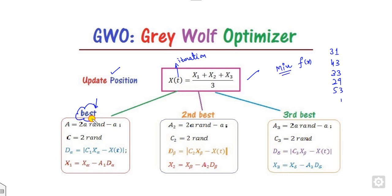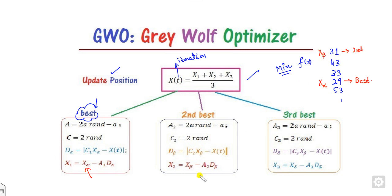What is the meaning of 'best'? Since my problem is minimization, the best value is the minimum. This best value is denoted as x_alpha. What is the second best value? The second best value is denoted as x_beta. Similarly, for the third best value, it is denoted as x_delta.